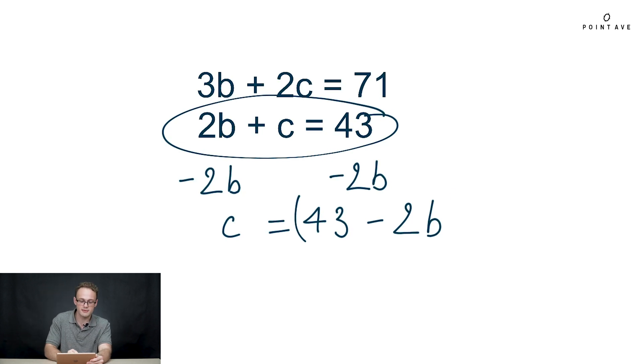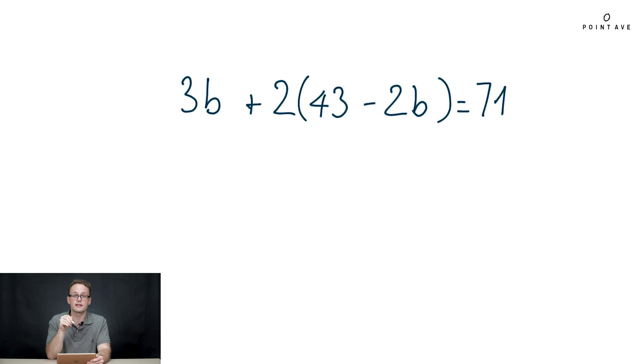To substitute, we take that expression, 43 minus 2B, and we plug into the first equation, and wherever we see C we plug in 43 minus 2B. So that's going to look like this. And so from here now we have one equation with one variable, which is B, and we can solve.